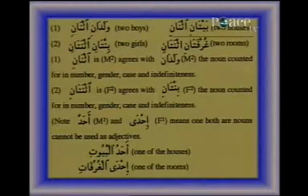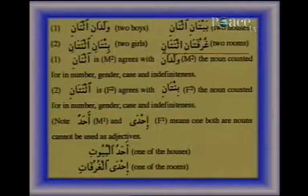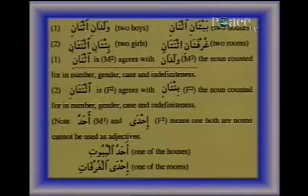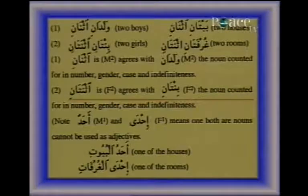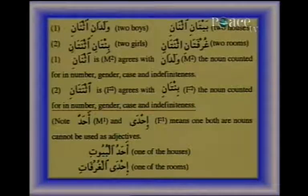Can the class give an example for masculine and one for feminine? Kitabun wahid — one book. Zahratun wahidah — one flower. For two: Waladan ithnan (two boys), Baitan ithnan (two houses), Bintan ithnatan (two girls), Ghurfatan ithnatan (two rooms). Ithnan is masculine dual and agrees with waladan. Ithnatan is feminine dual and agrees with bintan. The noun is counted for in number, gender, case, and indefiniteness.